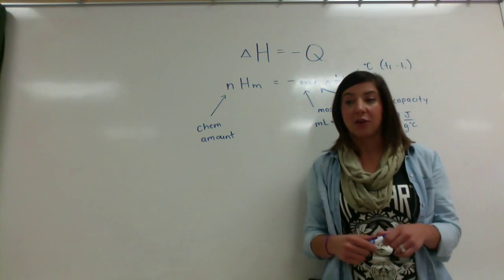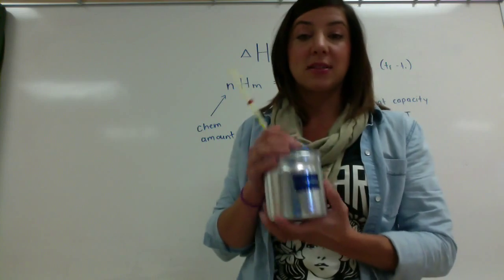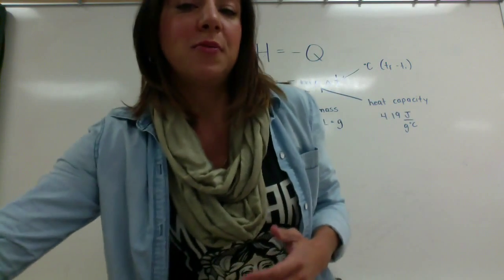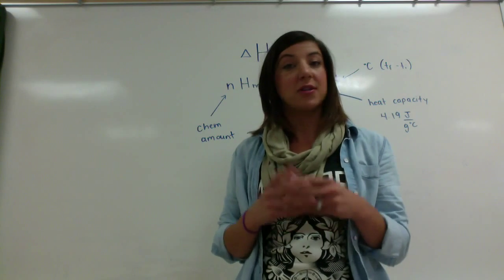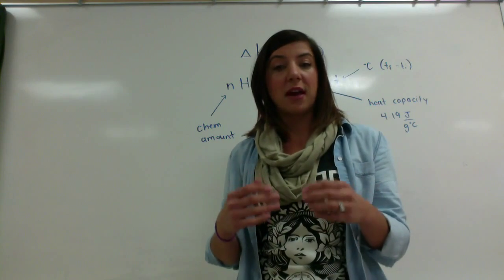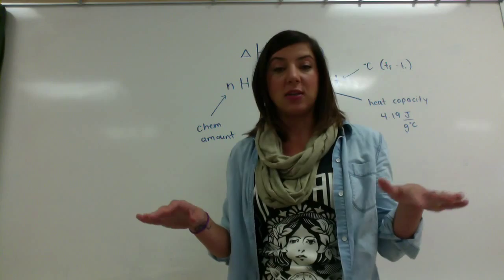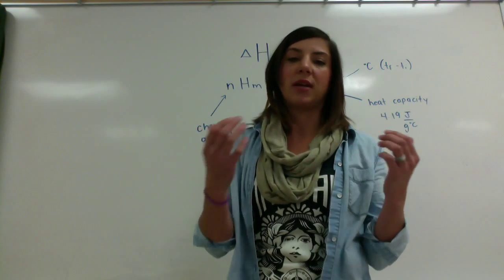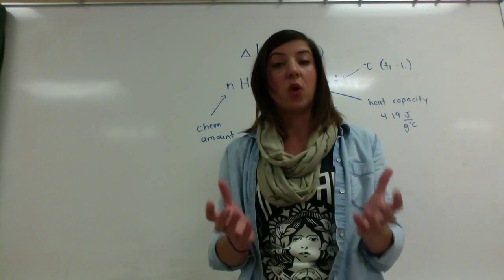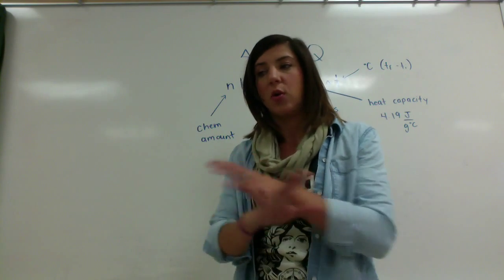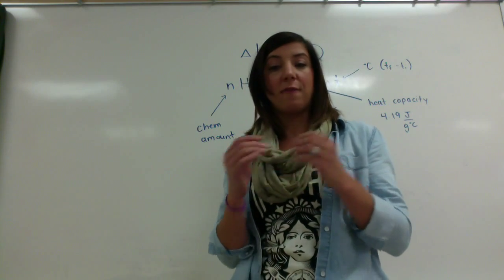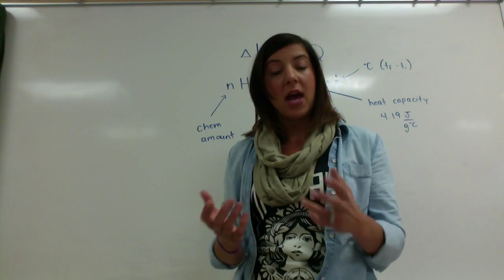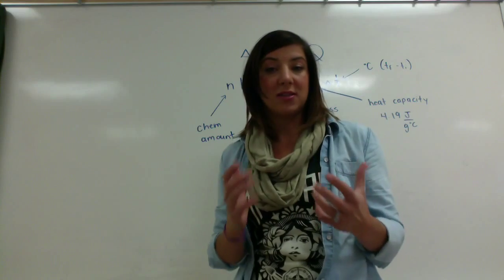Some assumptions we make in calorimetry: we assume the calorimeter is a perfectly closed system. If you're using a styrofoam cup calorimeter, we assume styrofoam does not absorb any heat, so we don't need its heat capacity. We also ignore the heat capacity of the thermometer and stirrer — we assume all energy goes directly into the water. We also assume that the volume and mass of water are exactly the same, that we're always using water, and that the solution has the heat capacity of water (4.19 J/g°C) regardless of any dissolved ionic compounds.